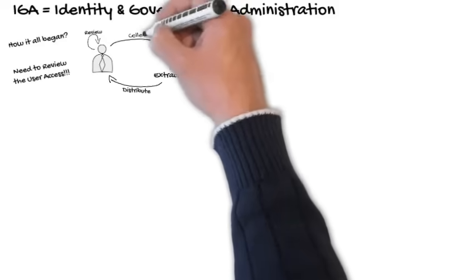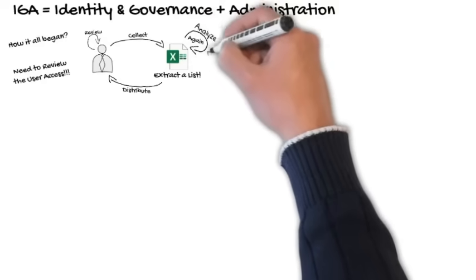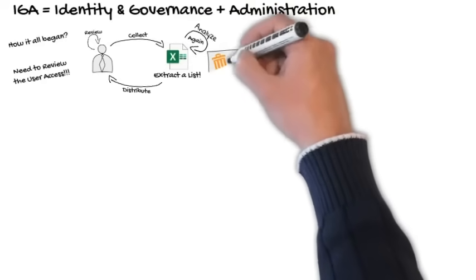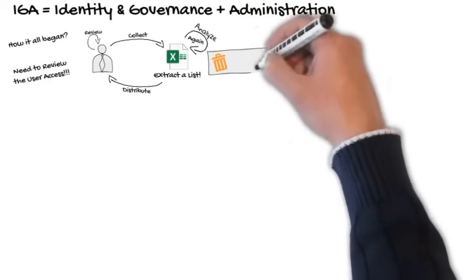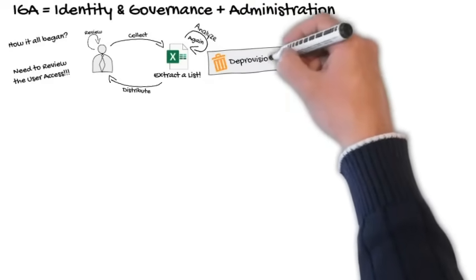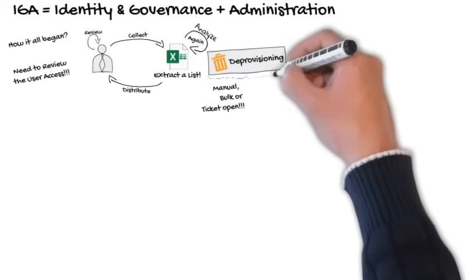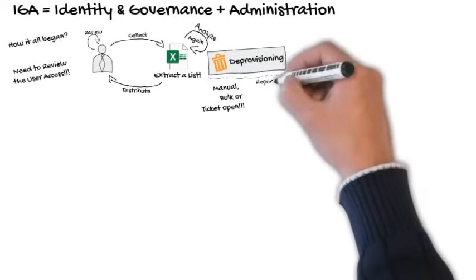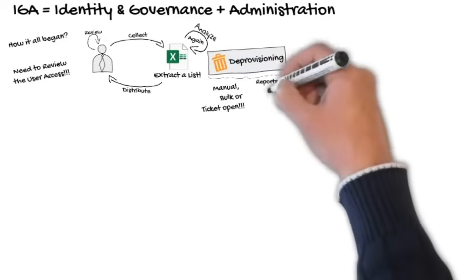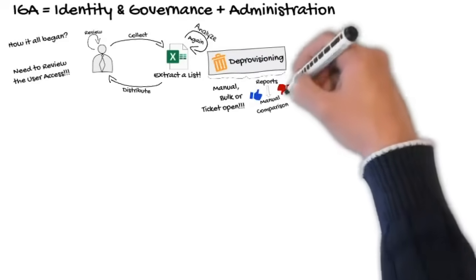After that, he consolidates the response and returns it to the campaign admin. Then the campaign administrator filters and requests the removal of access as a bulk load using an ITSM solution or an IDM. As a result, the extraction of a report can be performed and compared with previous ones for auditing purposes.